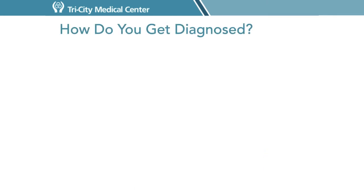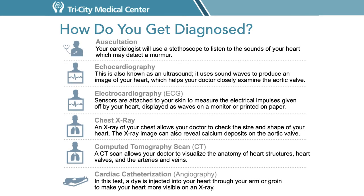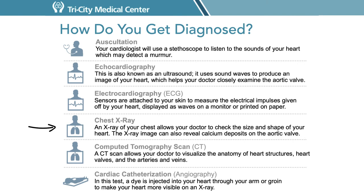How are you diagnosed with aortic stenosis? There are many methods. In addition to obtaining a medical history and a physical exam, various tests are used to diagnose valvular heart disease. This includes auscultation — a cardiologist listening to your heart with a stethoscope — echocardiography, which uses sound waves to produce an image of your heart and helps examine the aortic valve closely. An EKG is performed by attaching sensors to your skin to measure the electrical impulses of your heart. A chest x-ray allows us to look at the size of your heart and look for calcium deposits on the aortic valve.